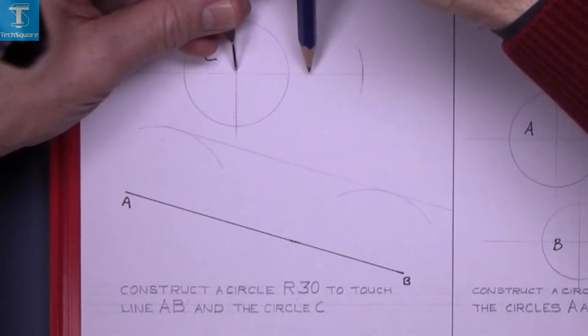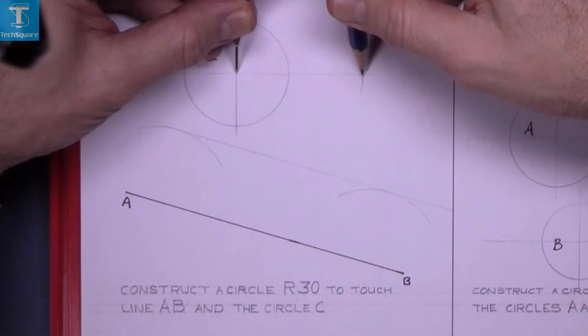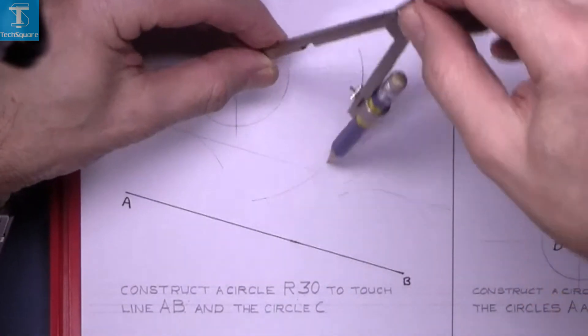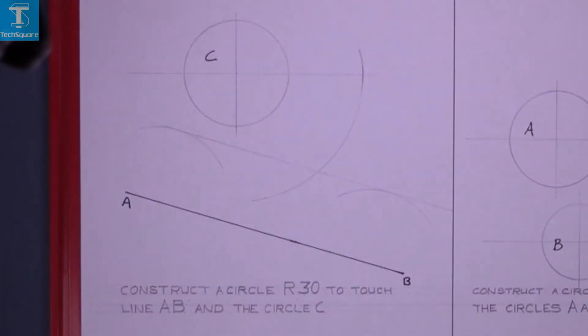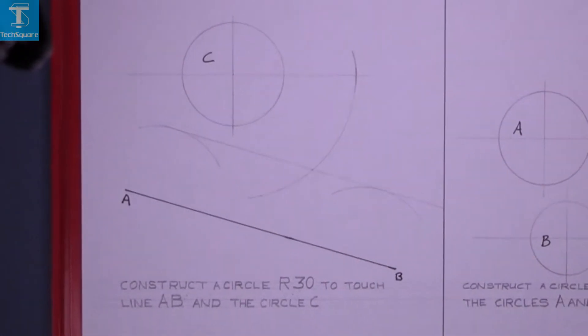Now set the compass from center of circle C to the new point you've found and draw an arc. Now that arc will have gone through the center of the circle, so where the two meet, that there is the center of the new circle.